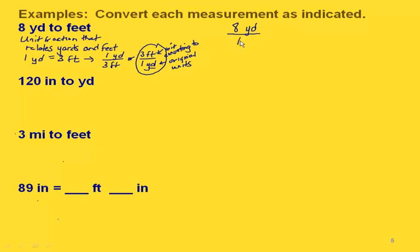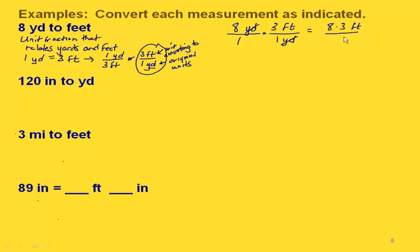We take our 8 yards over 1 and multiply by our unit fraction, 3 feet over 1 yard. We can do this because a unit fraction equals 1. The yards cancel out, leaving feet. Multiplying straight across gives us 8 times 3 feet on top and 1 on the bottom. So 8 times 3 is 24 feet — meaning 8 yards equals 24 feet.